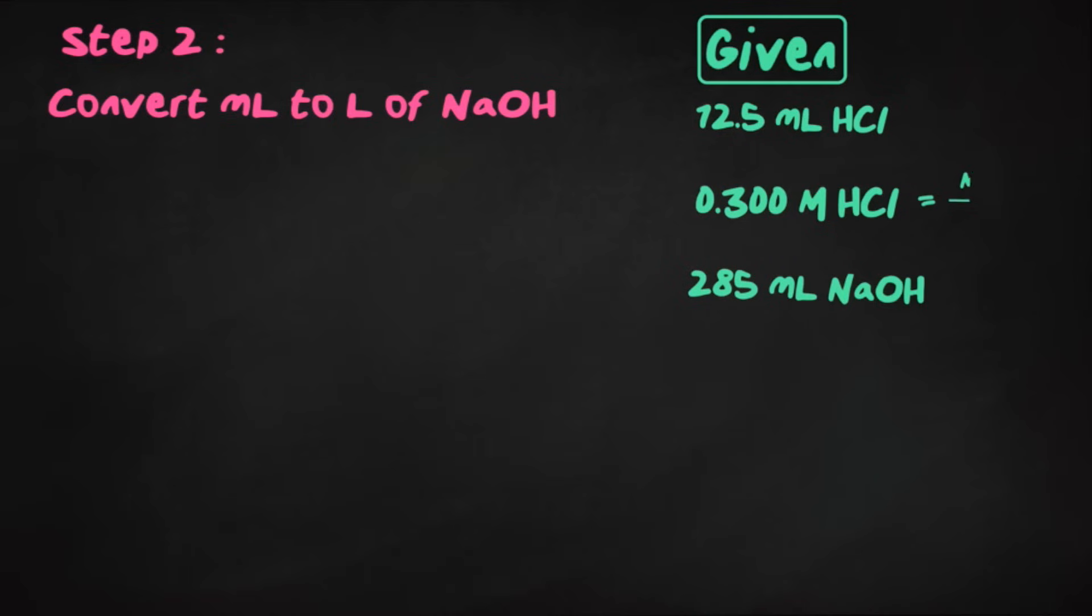Our next step is to convert the milliliters to liters of the NaOH that was provided. So in our given, we were given the 285 milliliters of NaOH. So since we're finding molarity, this is going to be the second part where we have moles that we just found in step one, and now we're finding the liters of NaOH, and at the end we'll divide.